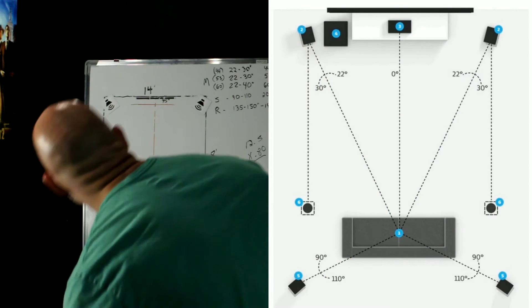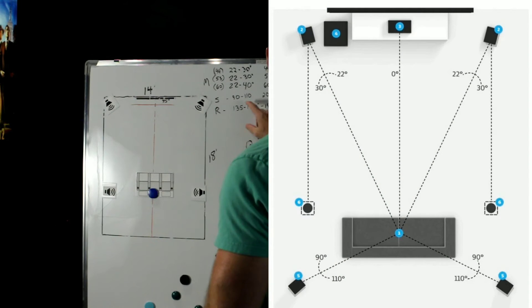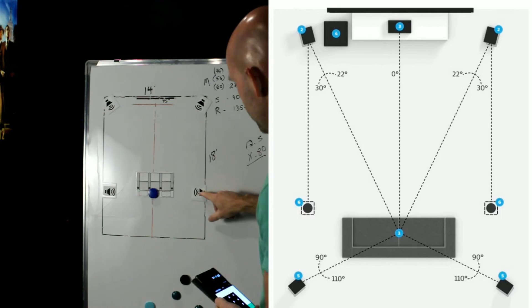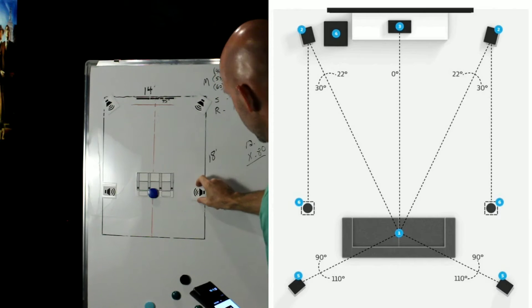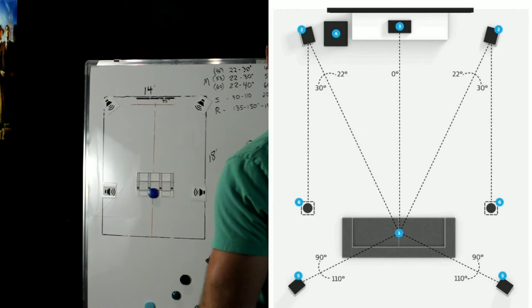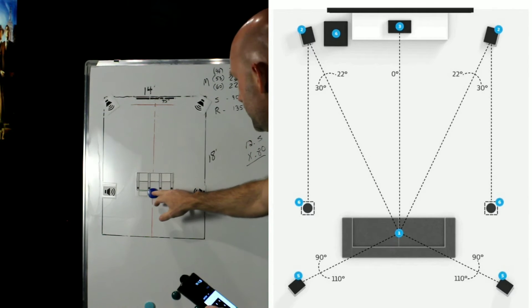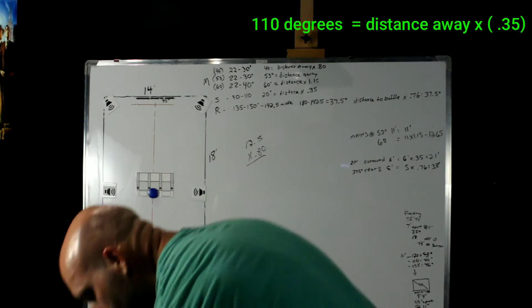If there's a wall here or we've only got a foot or two behind these couches, we don't have room for rears. So for our surrounds, Dolby specs 90 to 110 degrees. So to find 20 degrees, which would be that 110, which is 20 degrees off of this 90 right here,